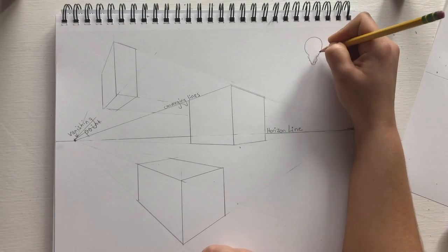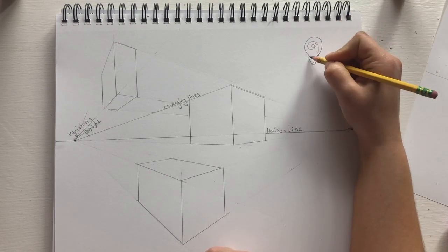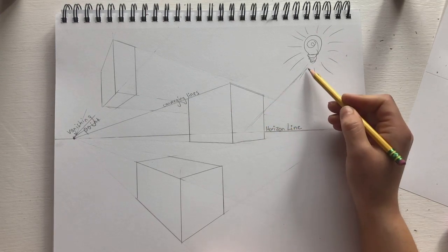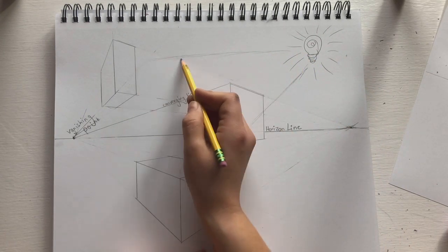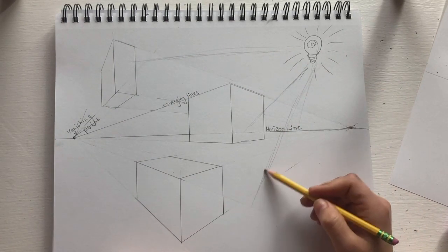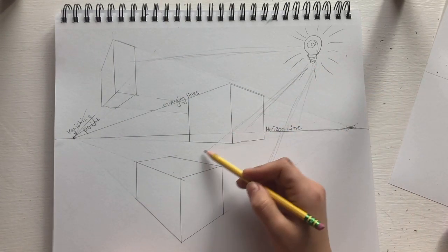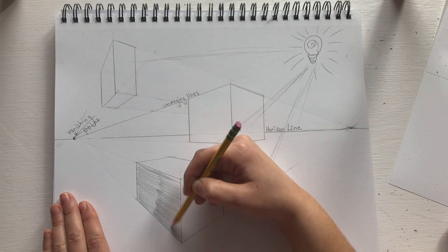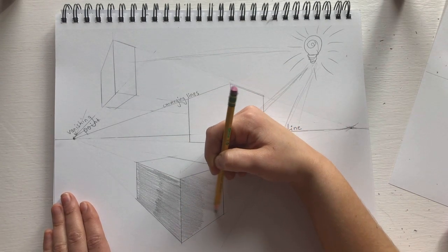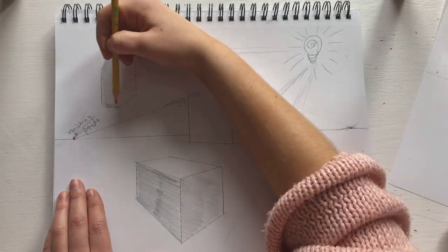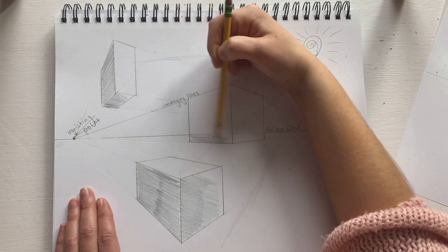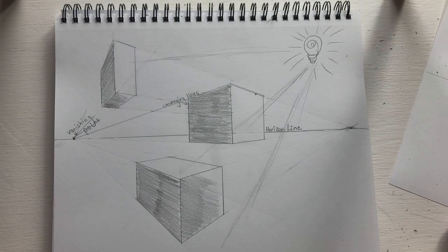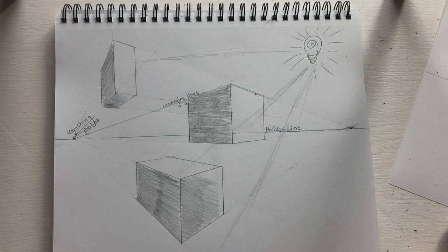Now we're going to practice our shadows by adding a light source. You can add your light source from whatever direction, but remember your light source is going to define where your shadows are on your boxes. So be thinking, where is that light source hitting my box? Now I'm going to go ahead and fill in the shadows. And there you have it, how to draw in two-point perspective. Now let's look at a more practical use.